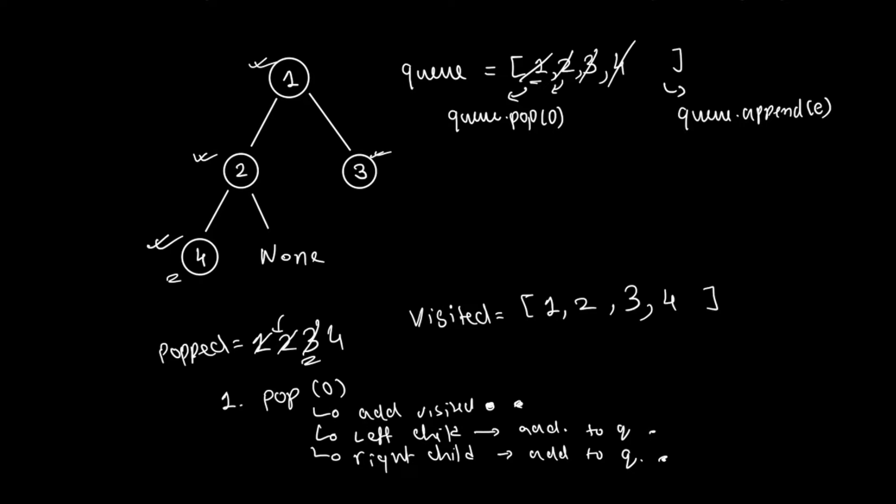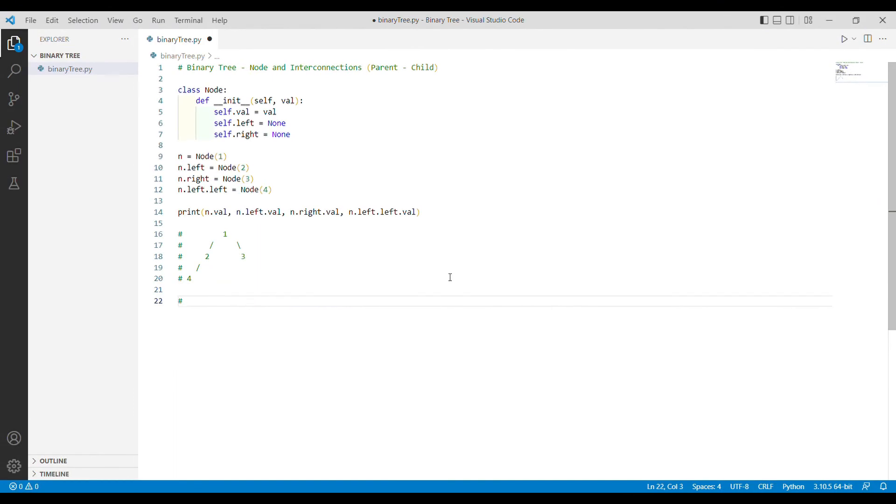Now I try to pop from the queue again, but there are no elements left, so we stop. We have traversed the entire tree. We can see that we were performing breadth first search — traversing nodes from left to right at each level, and that was the entire purpose of breadth first search.